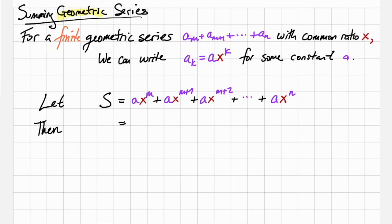Let's start off with a finite geometric series that looks like am plus am plus one plus dot dot dot plus an, where the series has a common ratio, this time we'll call x instead of r. That is, we can write a sub k as equal to a times x to the k for some constant a. And so we are looking for the sum ax to the m plus ax to the m plus one, all the way to ax to the n.